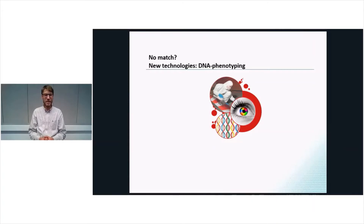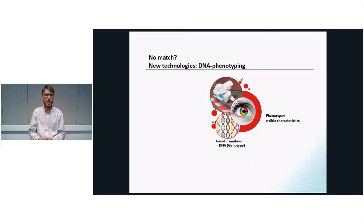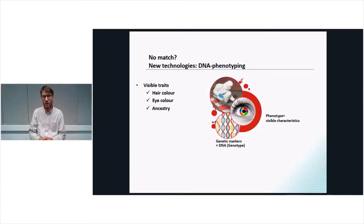But for a number of cases there is no match in the regular DNA profile, and that brings us over to the new technologies where we do expanded genetic analysis. The basic concept of DNA phenotyping is to analyze the genetic markers in the sample and see if we can extract information about a person's visible traits — a phenotype — from this sample. Can this help to identify the person who left that trace? In Tromsø we have focused on the most established of these traits, which is hair color, eye color, and also ancestry information.